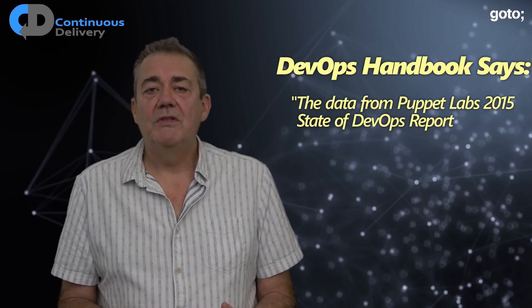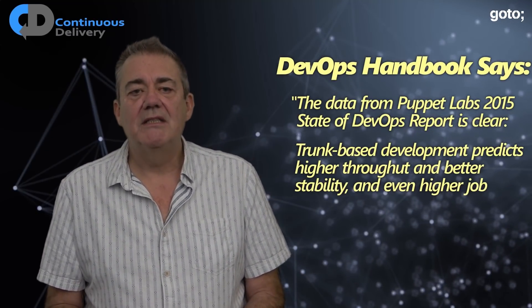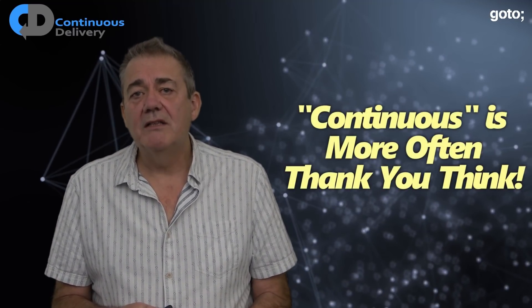The DevOps Handbook says the data from the Puppet Labs 2015 State of DevOps report is clear: trunk-based development — that is, continuous integration — predicts higher throughput, better stability, and even higher job satisfaction and lower rates of burnout. The man who invented Git says if you merge every day, suddenly you never get to the point where you have merge conflicts that are hard to resolve. We should work in tiny steps, commit those steps often — at least daily — and by preference commit many small changes every day. As one of my friends said when describing continuous integration: continuous is quite a lot more often than you think.